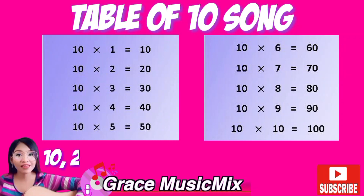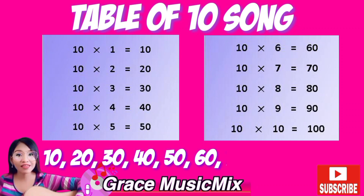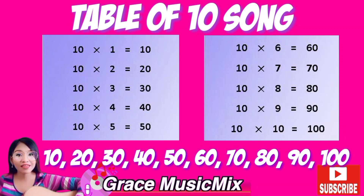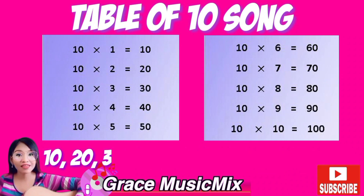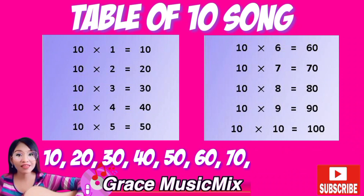10, 20, 30, 40, 50, 60, 70, 80, 90. Water and table 10: 10, 20, 30, 40, 50, 60, 70, 80, 90.